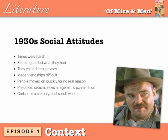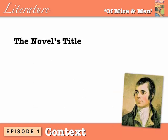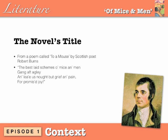Finally, let's look at the novel's title. This comes from a poem called 'To a Mouse,' written by the revered Scottish poet Robbie Burns. It's drawn from these four lines: 'The best laid schemes of mice and men gang aft agley, and leave us naught but grief and pain for a promised joy.'